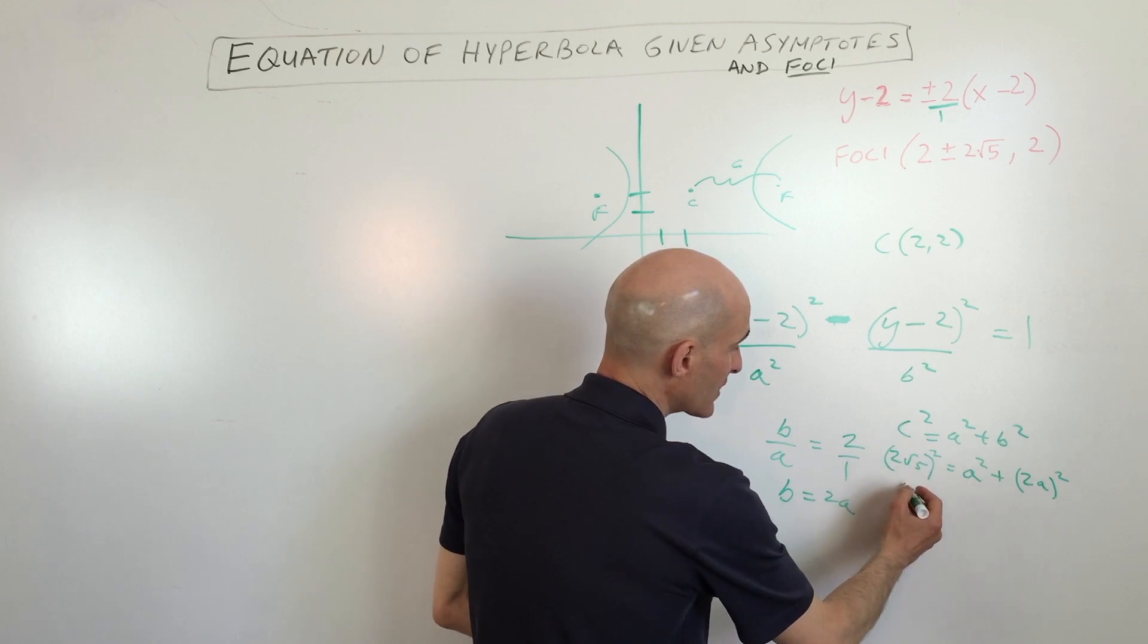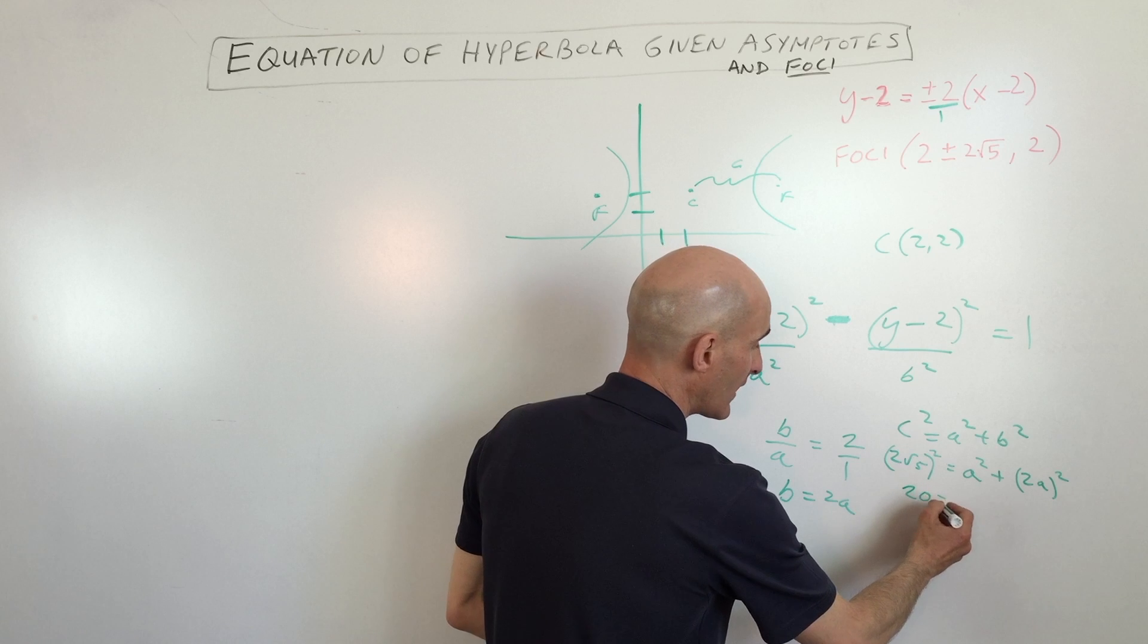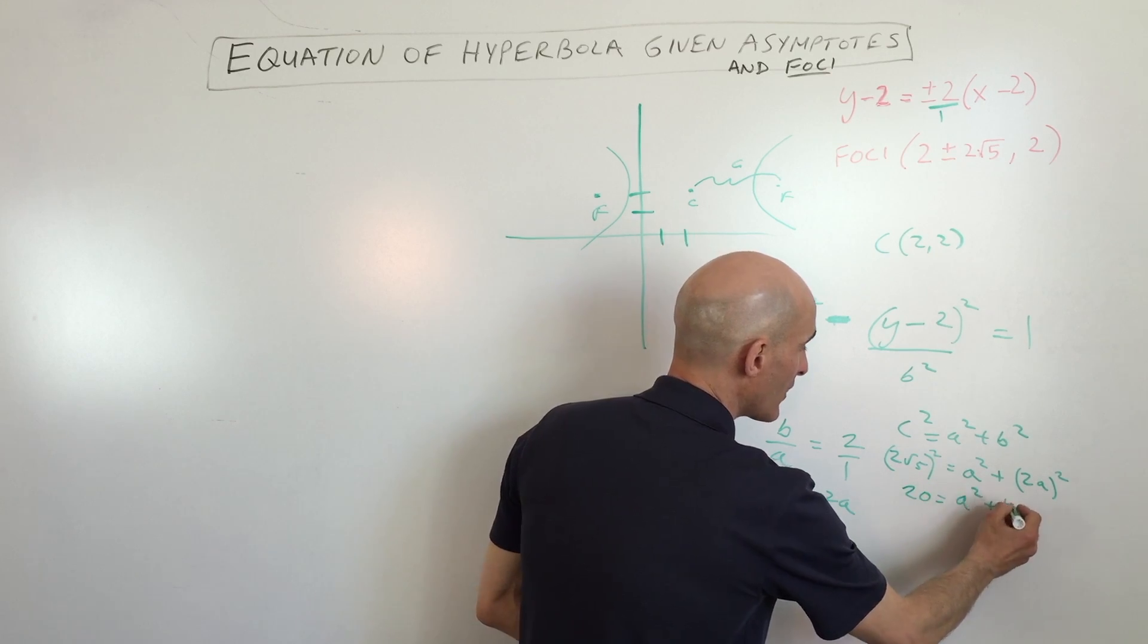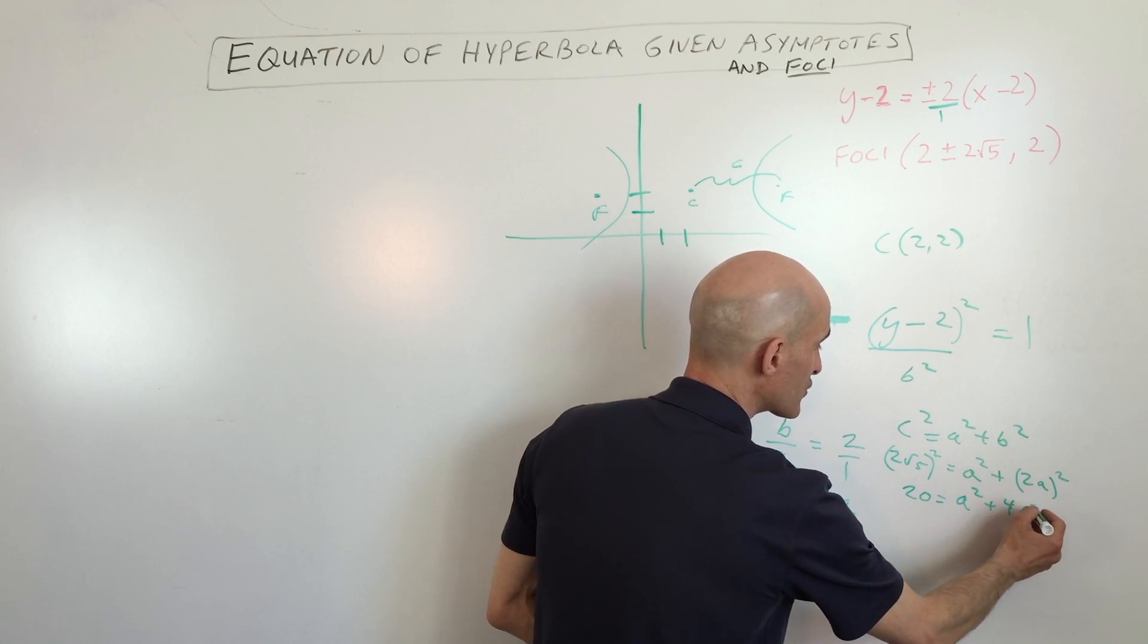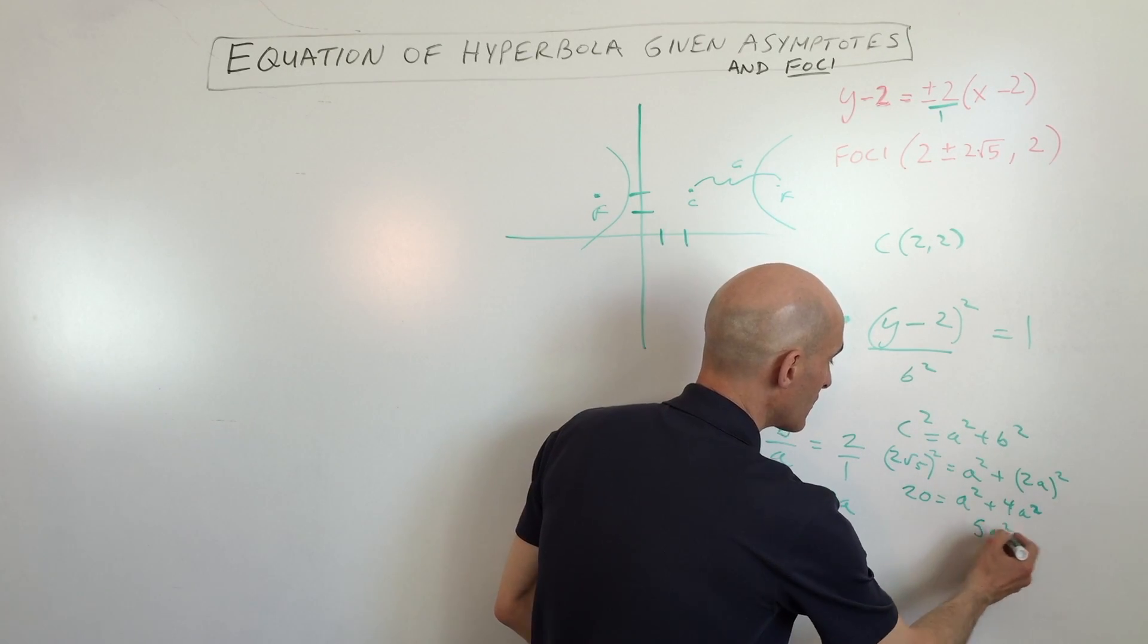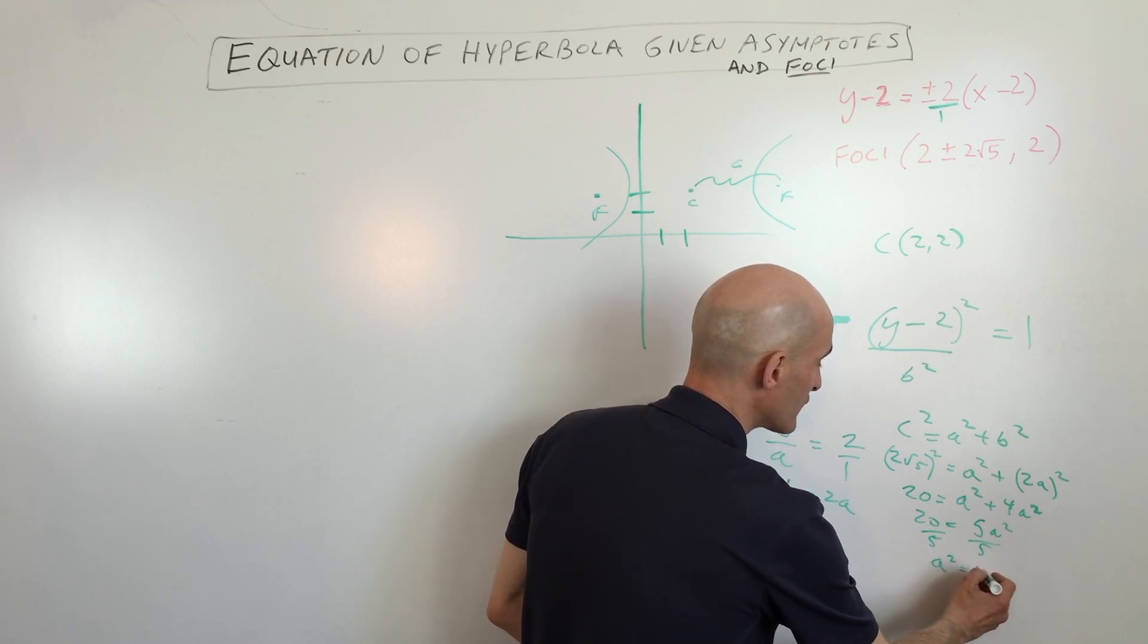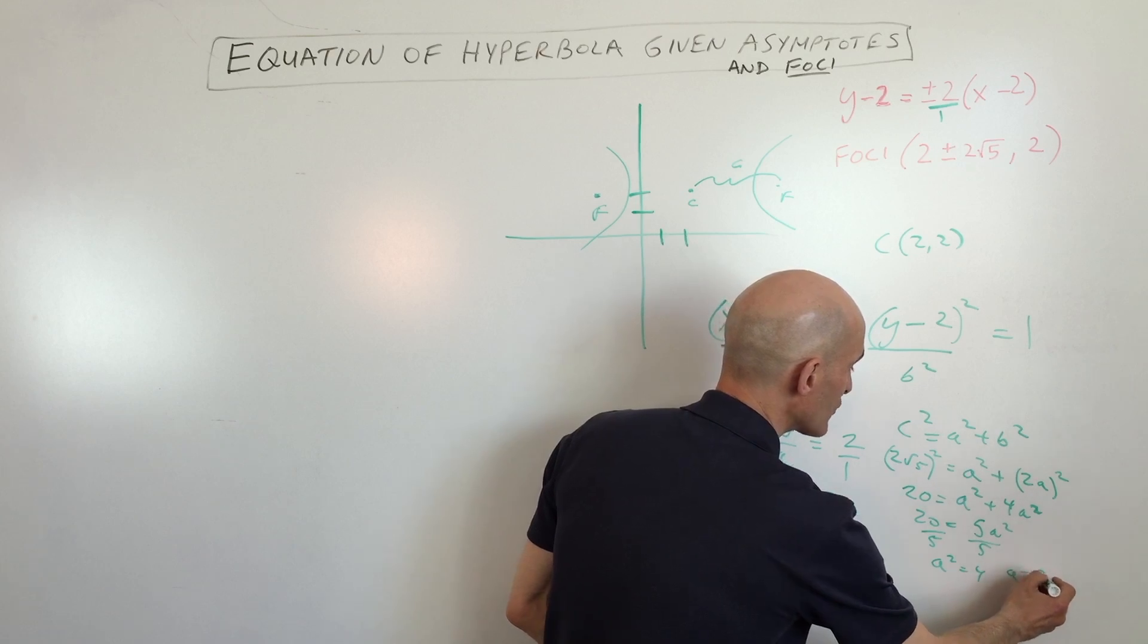So if we square this, we're going to get 2 squared is 4, square root of 5 squared is 5, so this comes out to 20, equals a squared plus 4a squared, because 2a times 2a. This gives us 5a squared equals 20, divide by 5, and we can see that a squared equals 4, or you could say a equals 2.